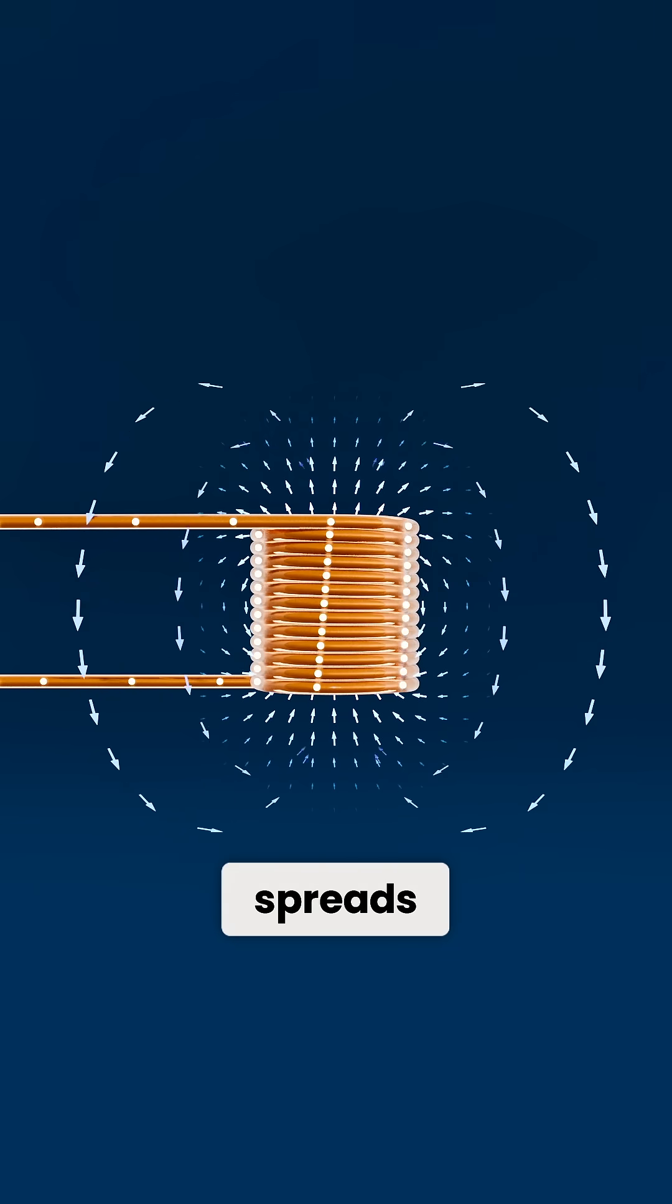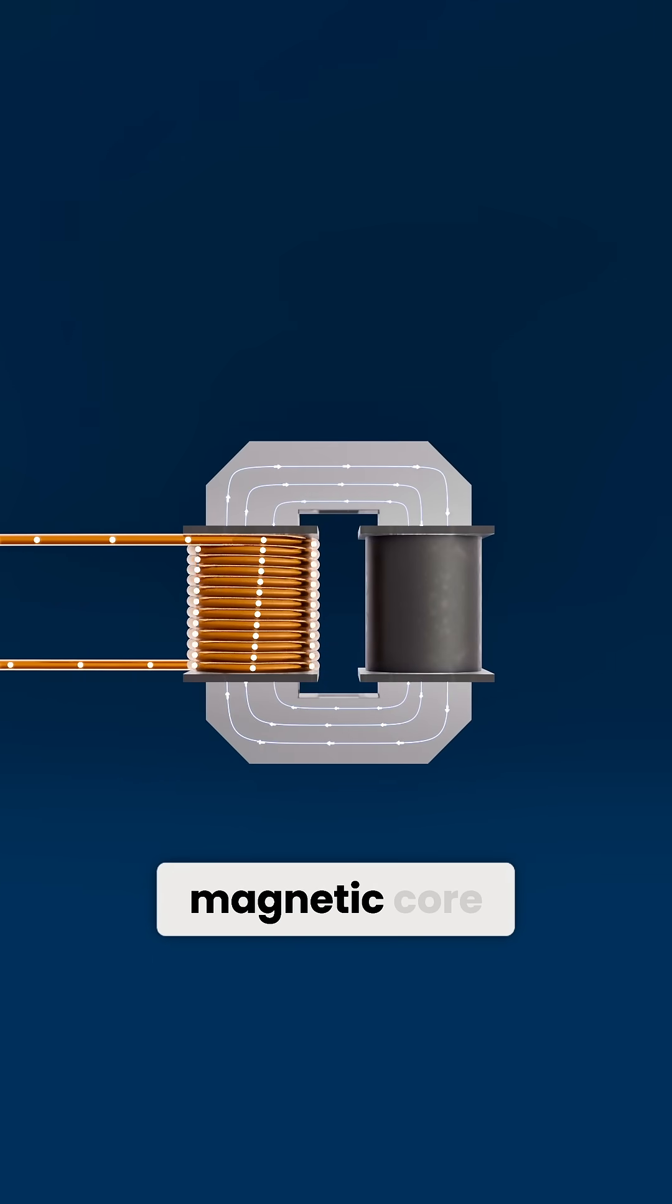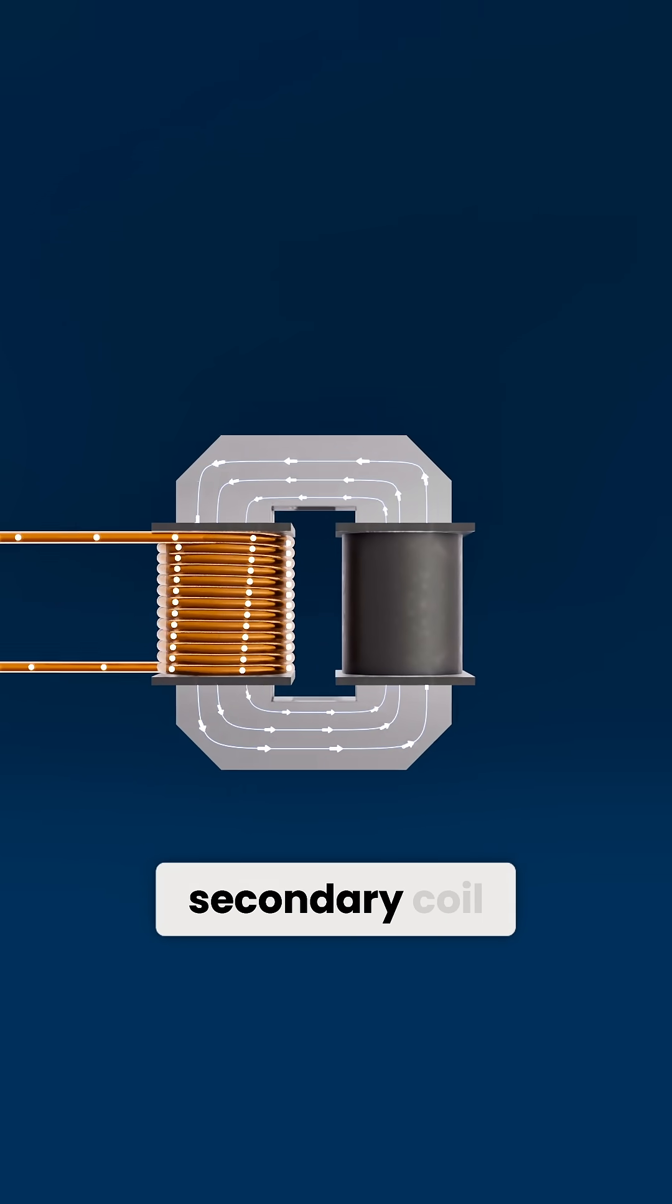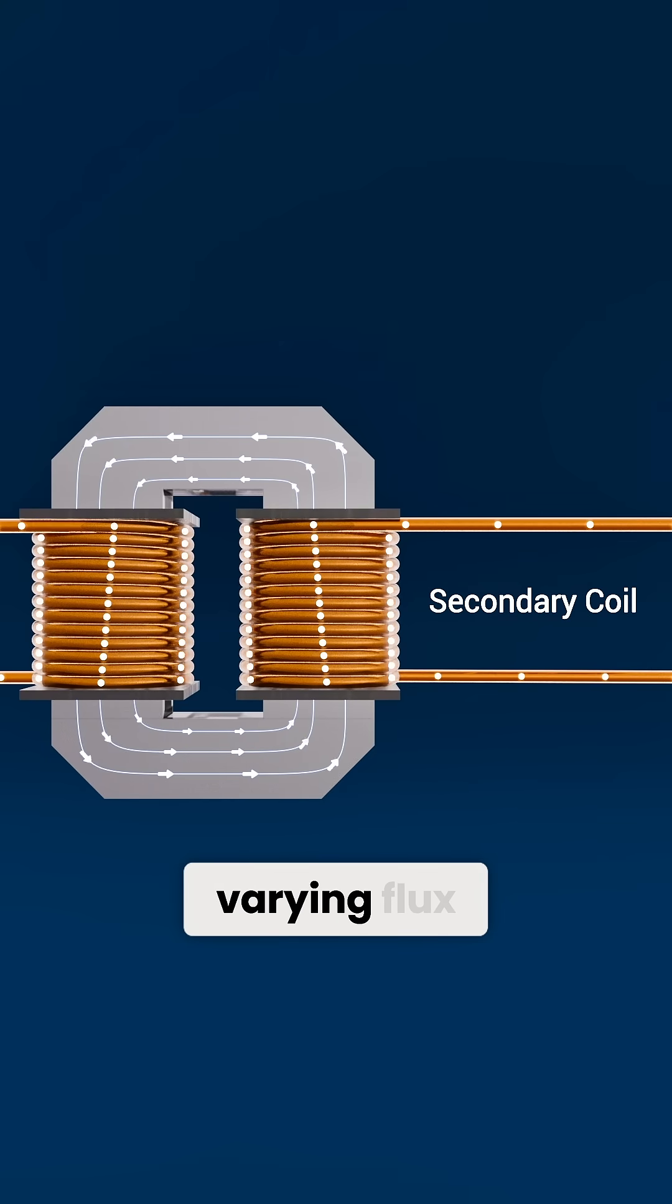This rapidly changing flux spreads through the transformer's magnetic core. Now enter the secondary coil, which sits within this varying flux.